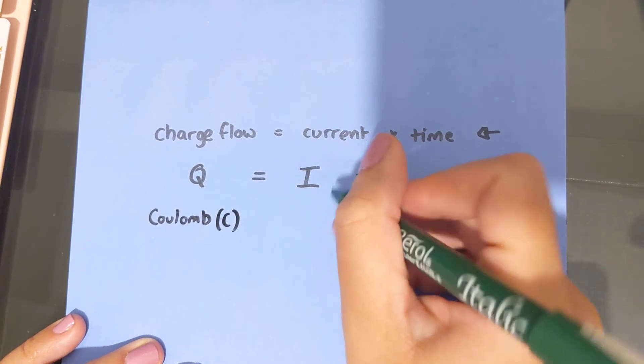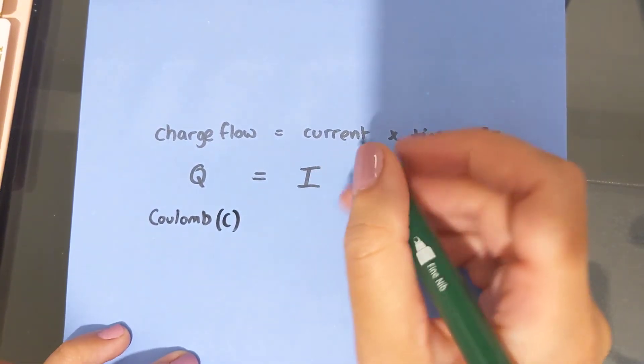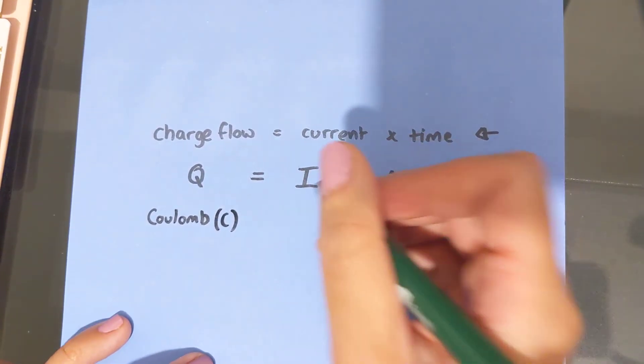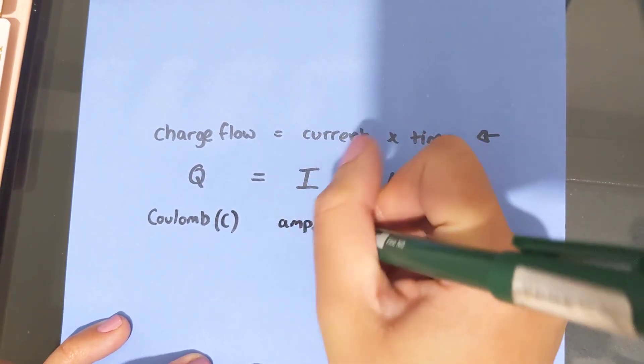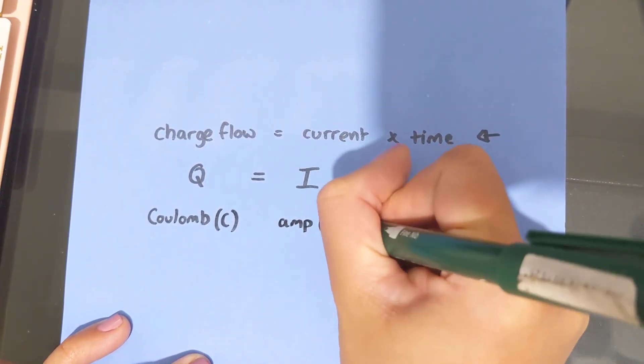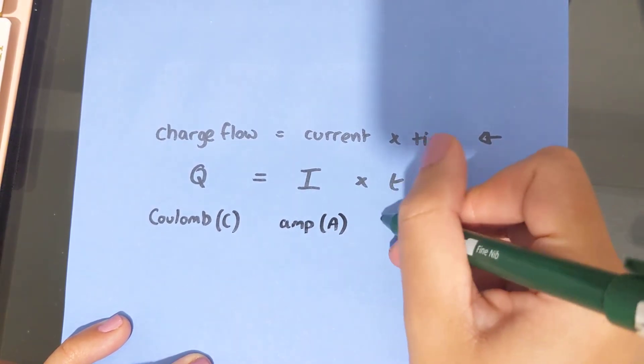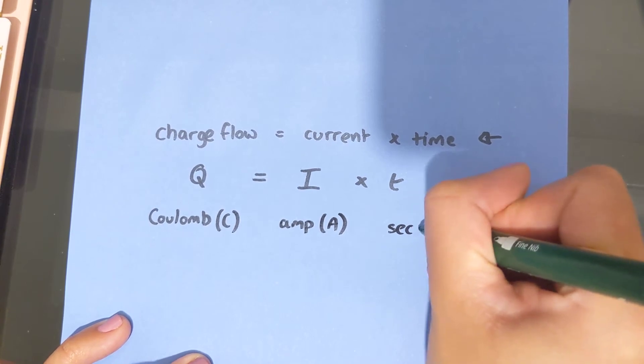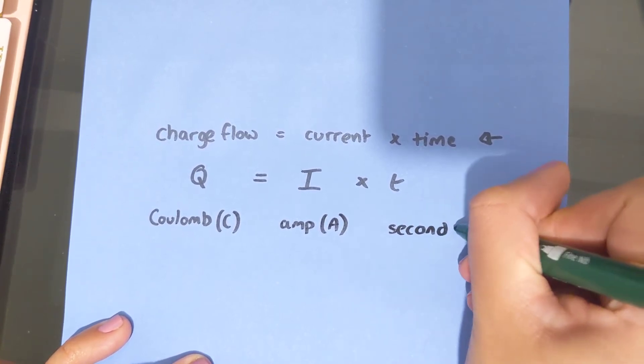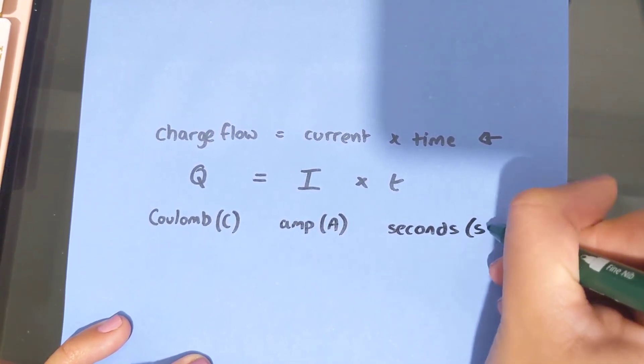The unit of current is an ampere, but we're happy to use amps. So ampere or amp, and the symbol for that is capital A. And then the unit of time is seconds, and the symbol for that is a small letter s.